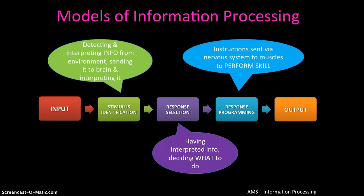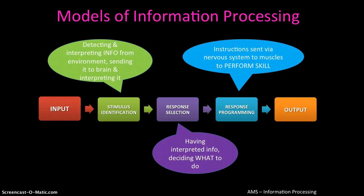The inputs come from your senses — what you see, hear, and touch. You then identify a certain stimulus; for example, in rugby, a ball coming towards you is detected. You interpret that information, picking out from the environment the relevant cues, and that information is sent to your brain. There you perform response selection — deciding what to do based on how fast the ball is coming, how far away it is, what angle it's coming from, and what other players are around you.